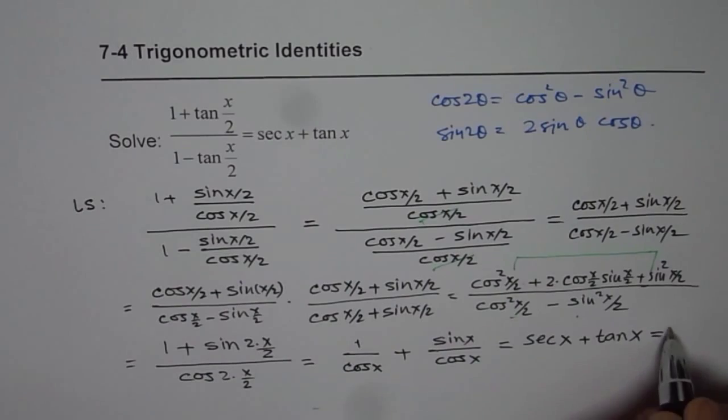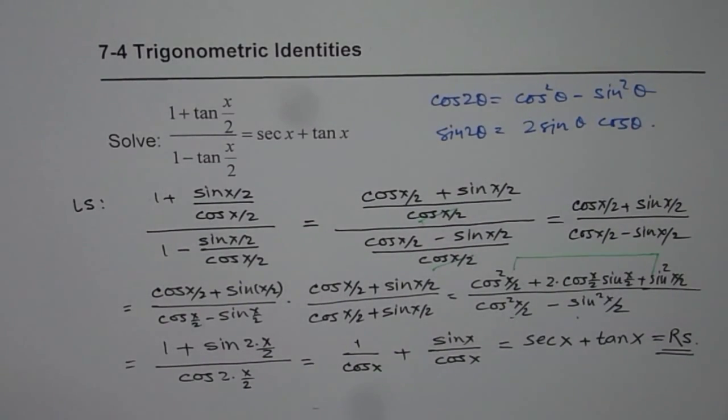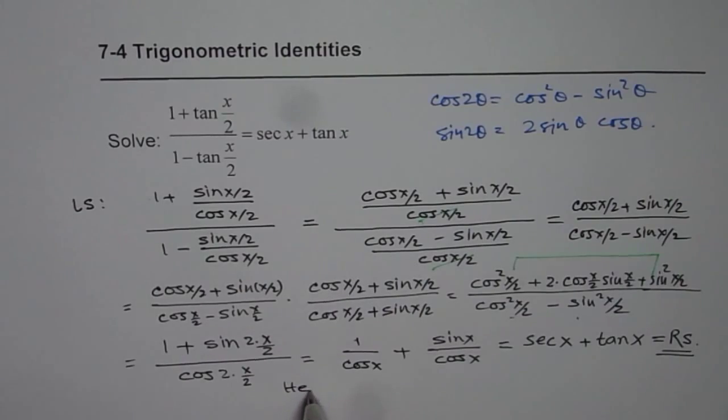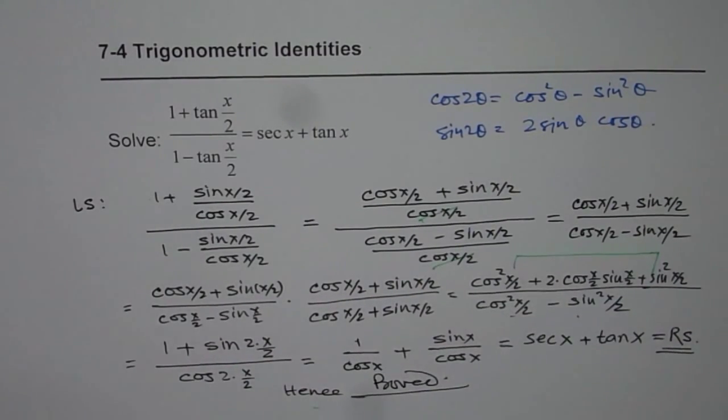And that equals to the right side. In trigonometry identities we are always trying to prove left side equals to right side. Once we get there, it's done. Hence proved.